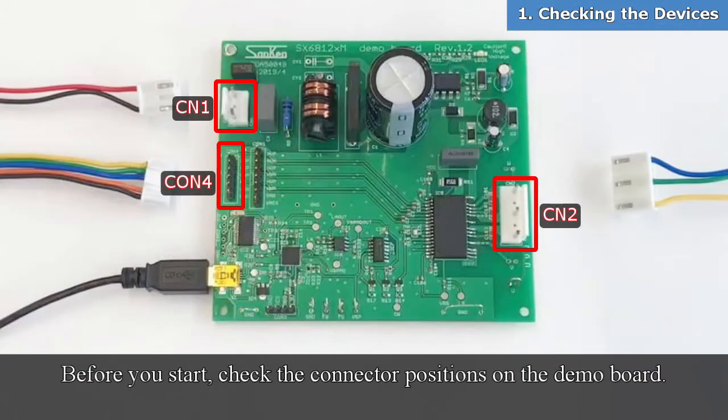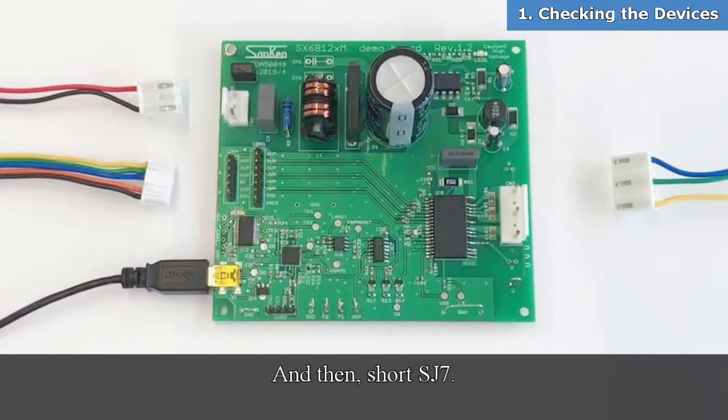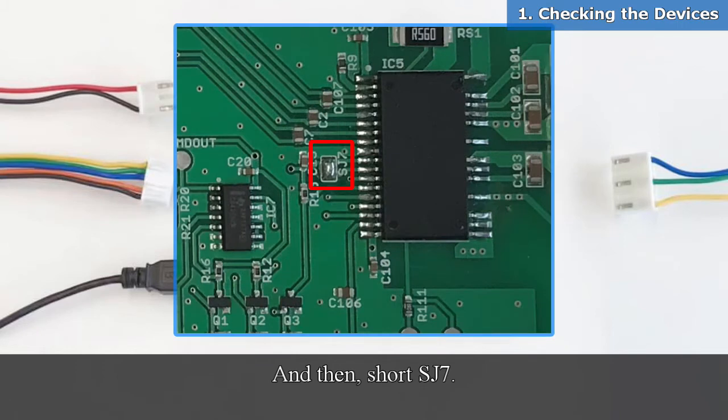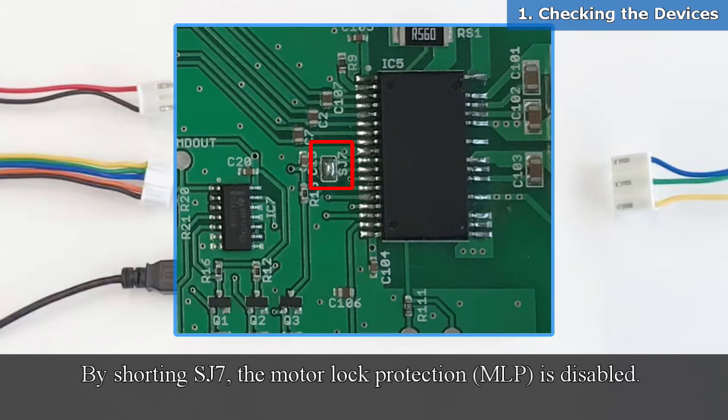Before you start, check the connector positions on the demo board. And then, short SJ7. By shorting SJ7, the motor lock protection is disabled.